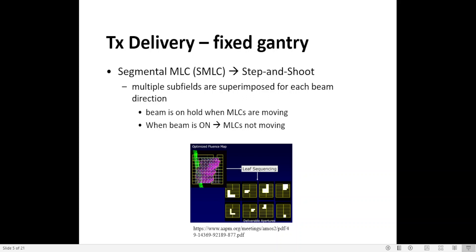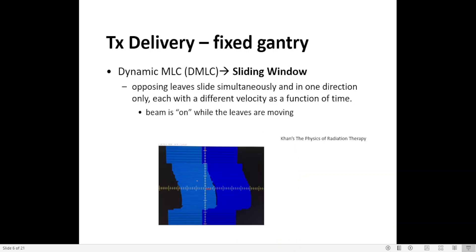A characteristic of step-and-shoot is that the beam is on hold when the MLCs are moving, and when the beam is on, the MLCs are not moving. Another treatment delivery option with fixed gantry is to use dynamic MLC, or sliding window, where opposing leaves slide simultaneously in one direction only, each with a different velocity as a function of time. A characteristic of sliding window is that the beam is on while the leaves are moving.